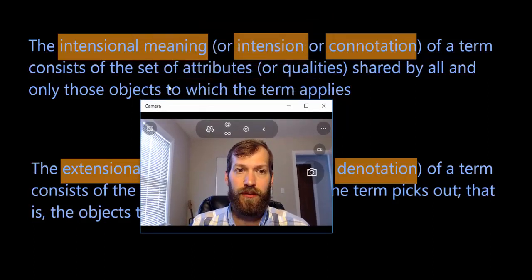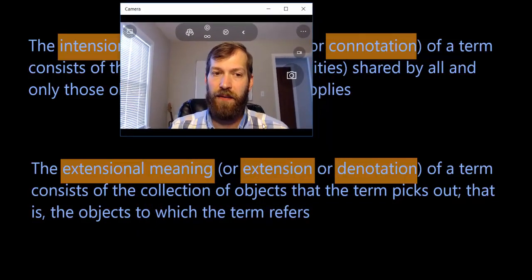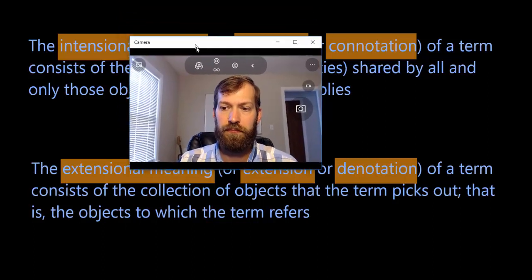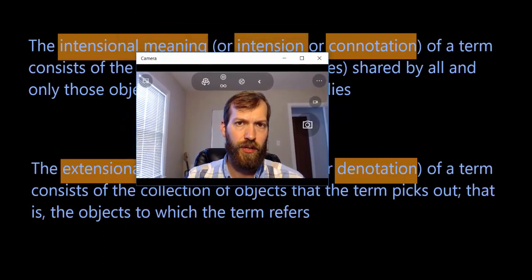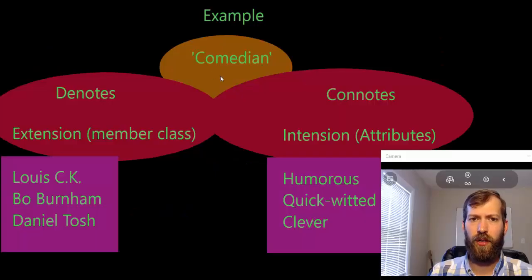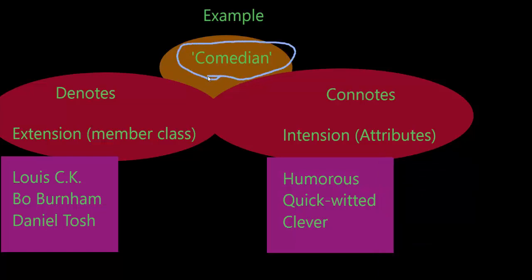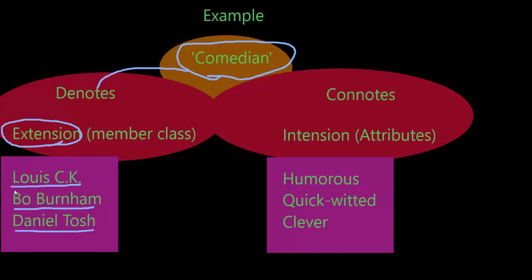Intension deals with the attributes and qualities of things that fall under a term's extension. Let's look at the term 'comedian' as an example. First, let's consider what 'comedian' denotes — that is, its extension. There are many comedians, so here are some examples: Louis CK, Bo Burnham, Daniel Tosh. These are all people who are comedians and belong to the extension of the term 'comedian.'